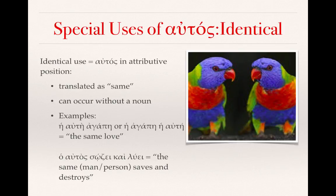The identical use of autos is autos in the attributive position, and we translate it as same. It can occur with or without a noun. For example, hei autei agapē, or hei agapē hei autei — in either case, translated as the same love. Without a noun, for example ho autos sōzei kai luei — we would translate this as the same man, or same person, saves and destroys. Ho autos is functioning as the noun, standing as subject of the two verbs sōzei and luei.